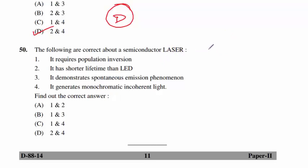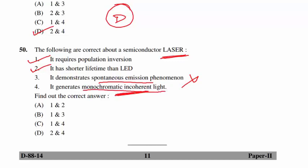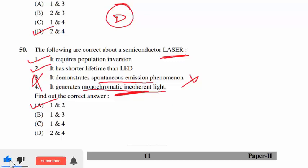Question 50 — the last question — about semiconductor lasers. A laser provides population inversion — true. It has a shorter lifetime than LED — true. It demonstrates stimulated emission (not spontaneous emission) — so statement C is wrong. It generates monochromatic coherent light (not incoherent) — statement about incoherent light is false. Statements 3 and 4 are false, so option A follows. In this video we discussed 50 questions. Please like and share this video, subscribe to my channel CravingGan, and join my Telegram group for PDF solutions. Thank you, all the best for your exams!